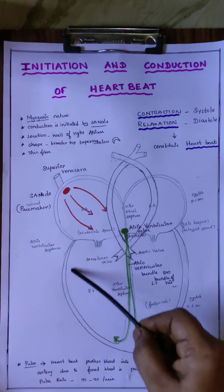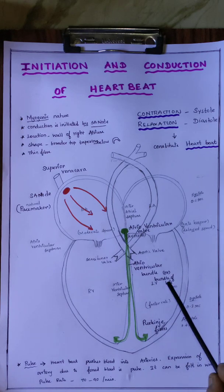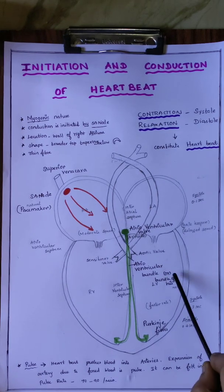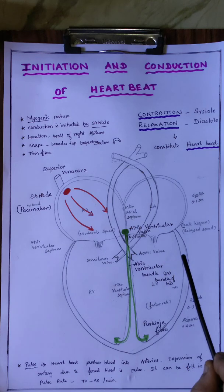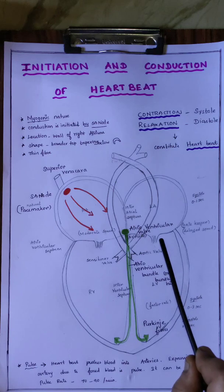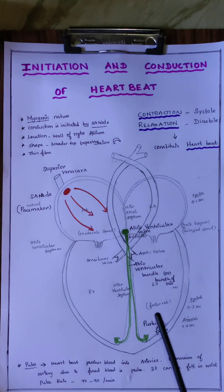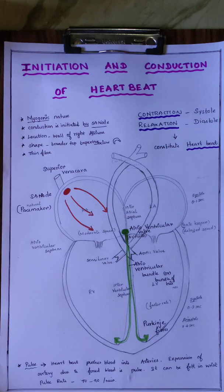The whole heart is made up of cardiac muscle, and it is myogenic in nature. What is myogenic? The heart doesn't need any stimulation from the nerves — it can generate the action potential itself. This is the conduction. How does it happen?